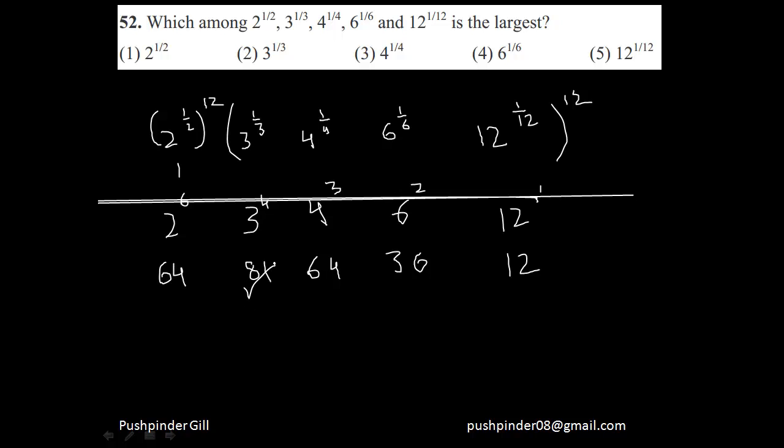So my option would be 3 to the power 4, right? So I hope this question was easy. If you're given CAT 2006, I hope that you haven't skipped this question. You did this question this way. It's very easy.